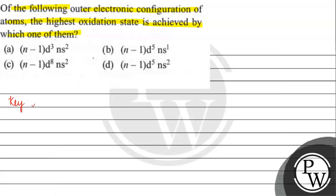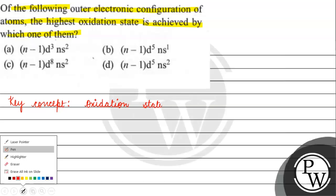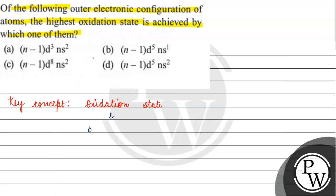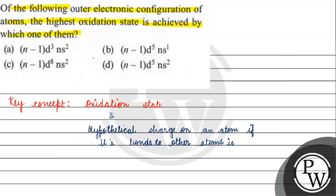The key concept for this question is oxidation state. Oxidation state is the hypothetical charge on an atom if its bonds to other atoms are considered ionic.